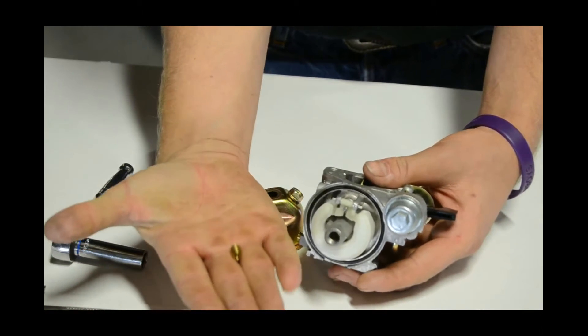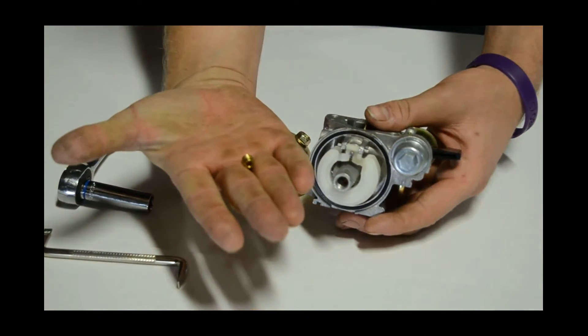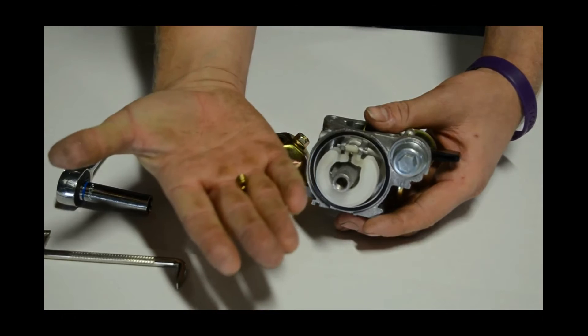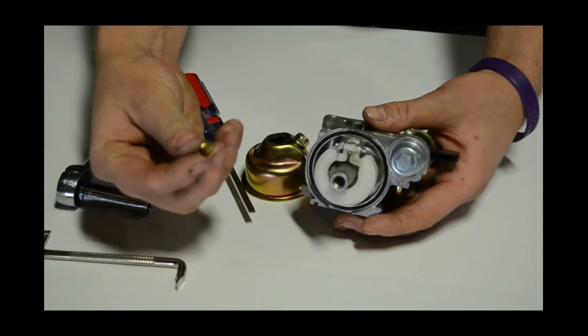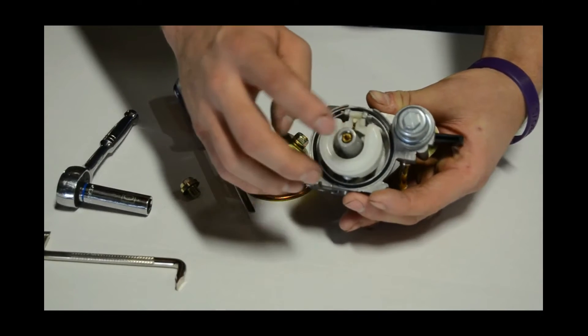Now, you have your main jet. It has a slot on one end and it only fits one way. Be sure that you're installing the main jet with the slotted end facing down towards the float bowl.